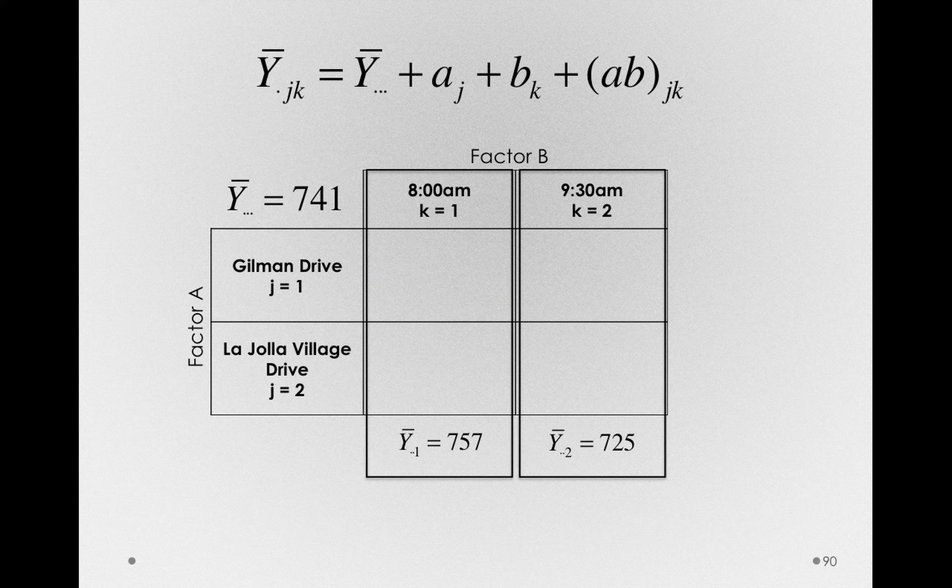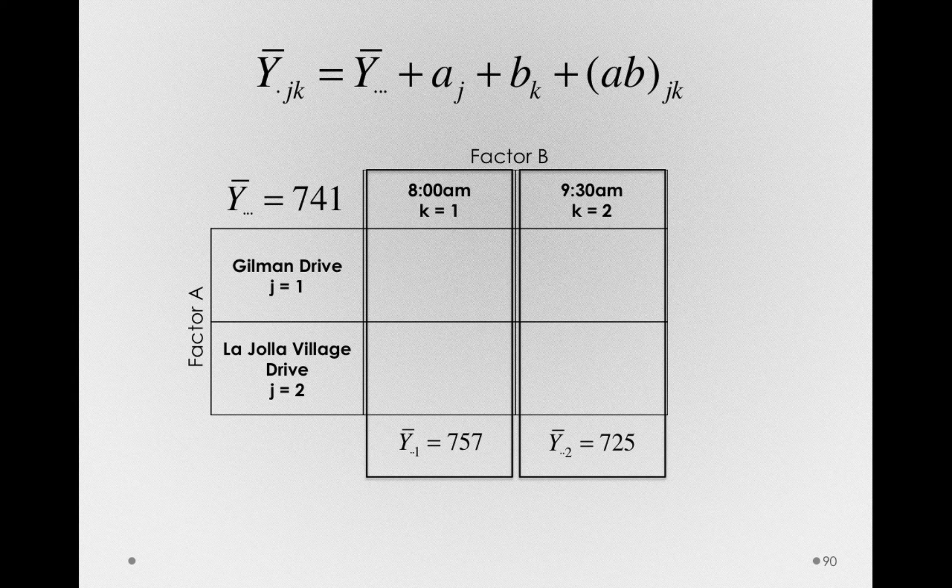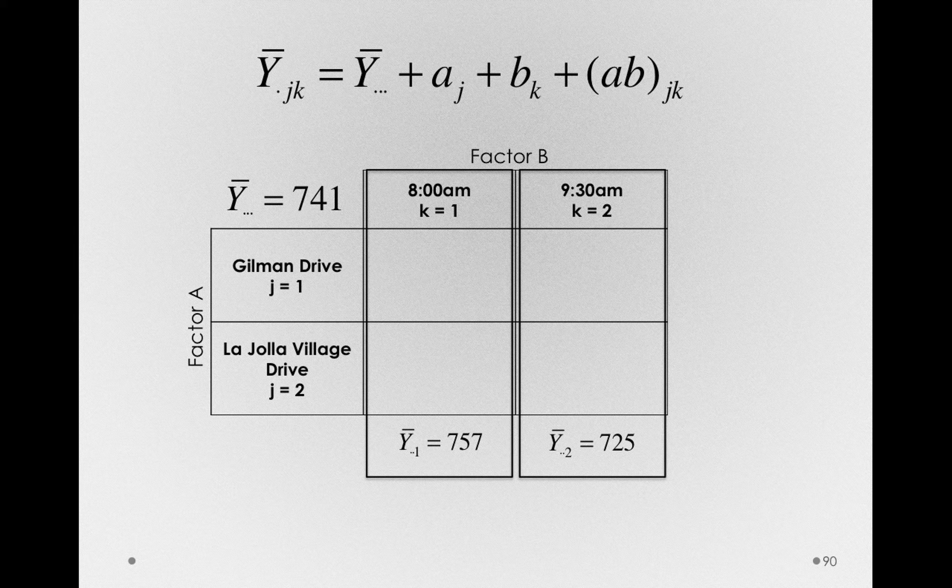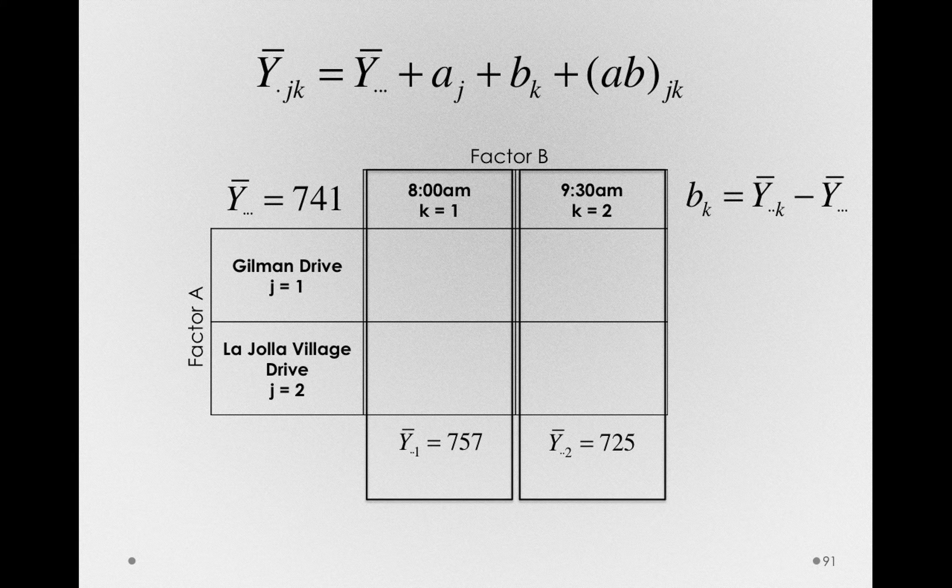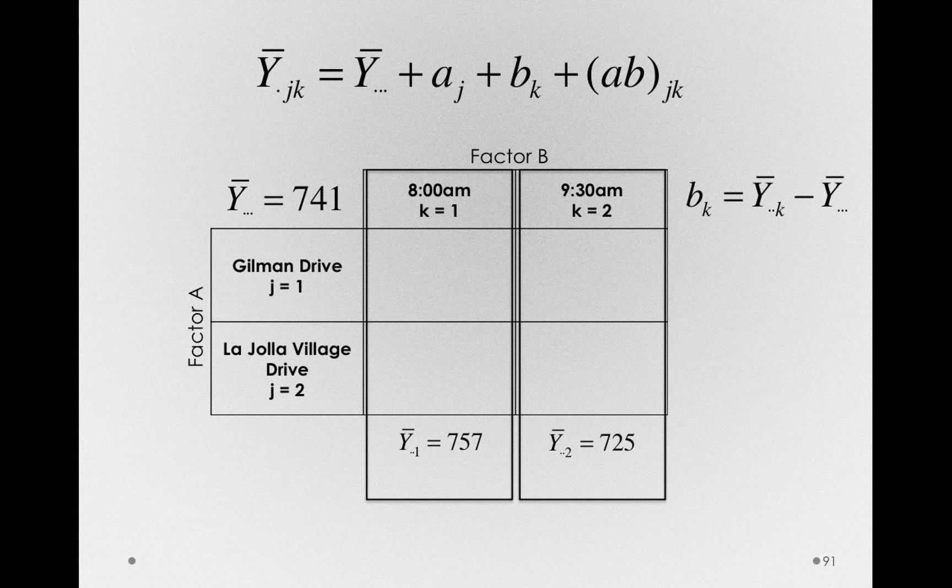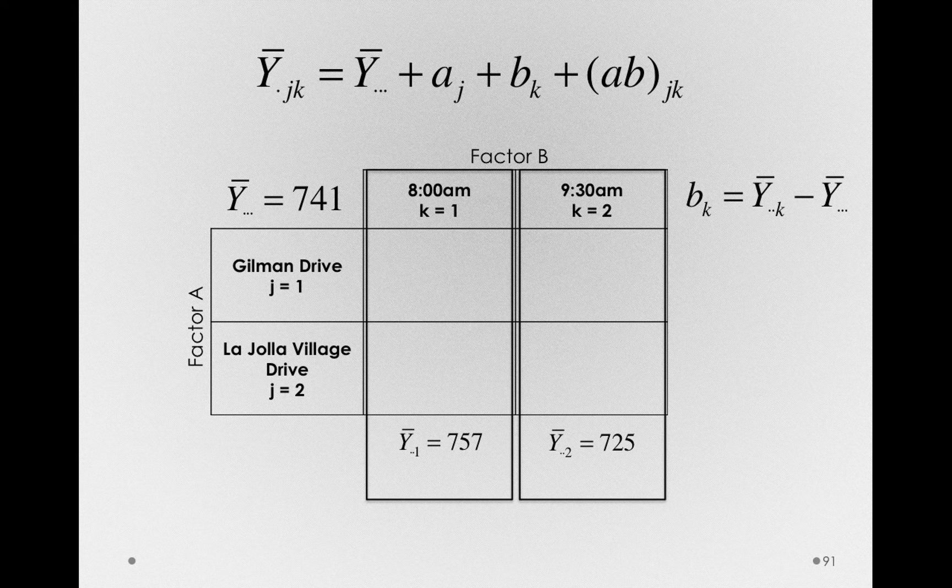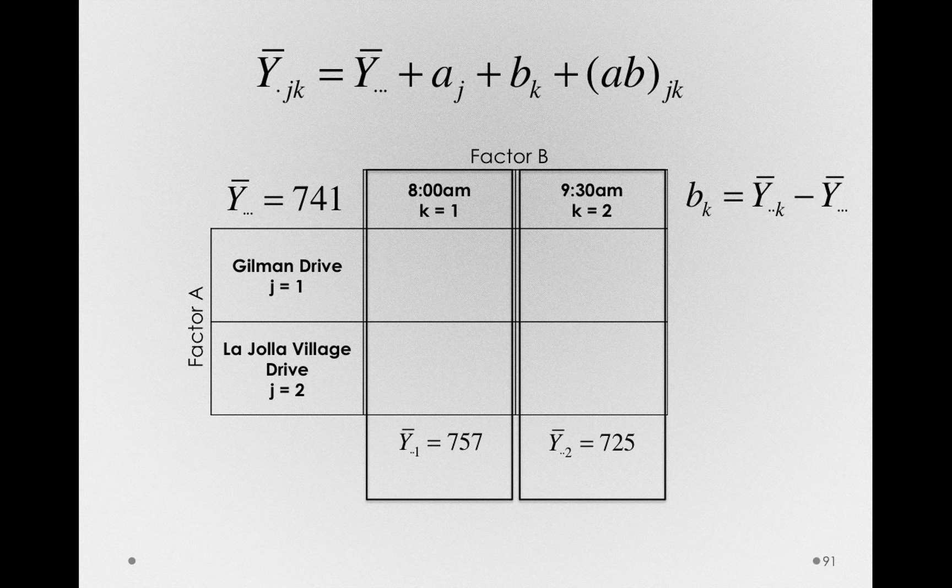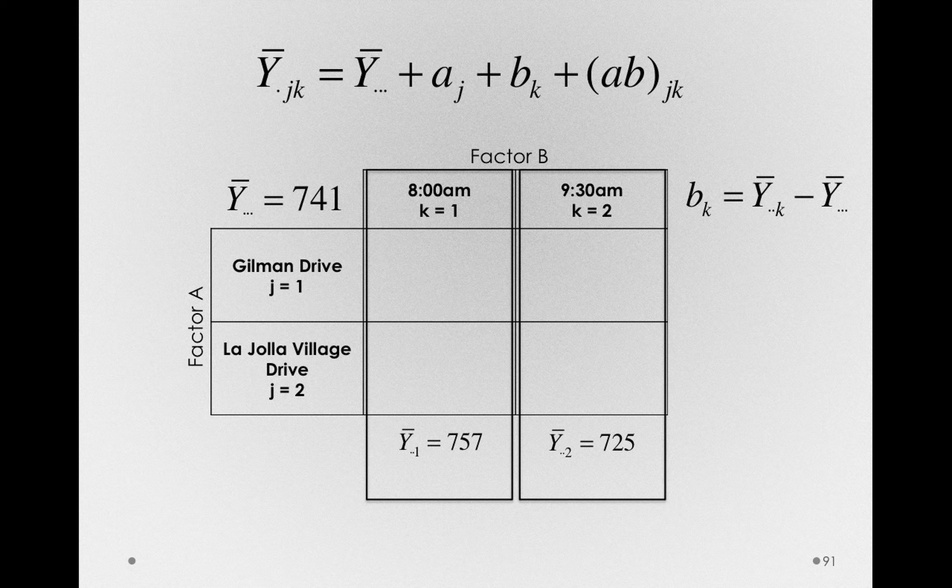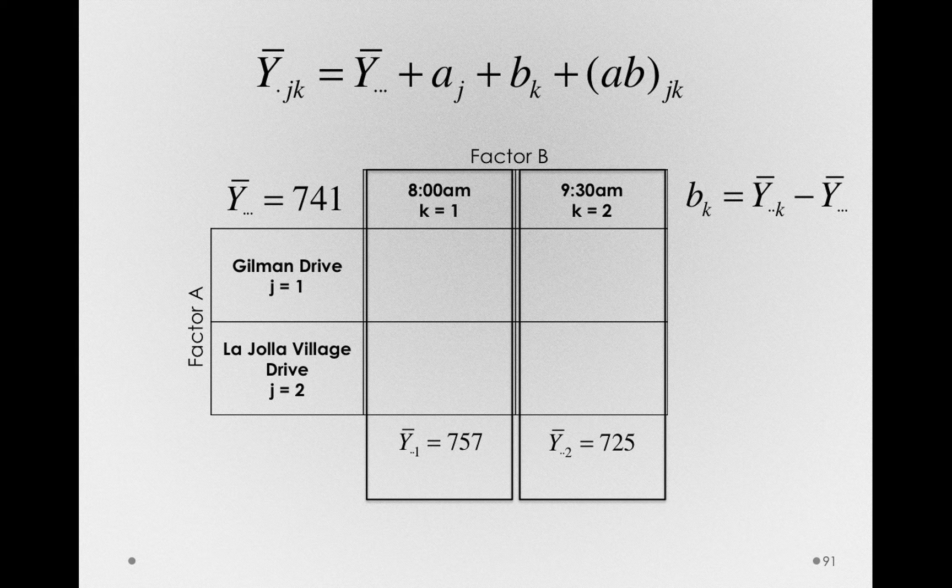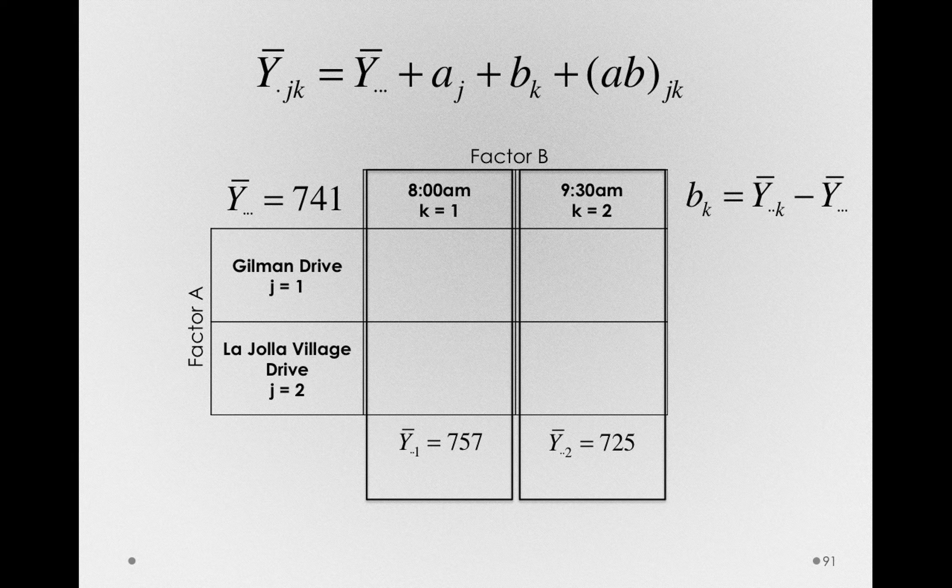Let me add these in at the bottom of our table, and we really do call these the marginal means because they're at the margin. Now, offsets in general are simply the deviations between a group mean and the overall mean. So in this case, the B sub K's are simply equal to the marginal mean for each of those K groups, so the Y bar dot dot 1 and Y bar dot dot 2, minus the overall grand mean, the Y bar dot dot dot. Let's not get lost in the notation here. We're using the notation to be specific, but in essence we're just asking how does the overall mean at 8 a.m. differ from 741, and how does the overall mean at 9:30 differ from 741?